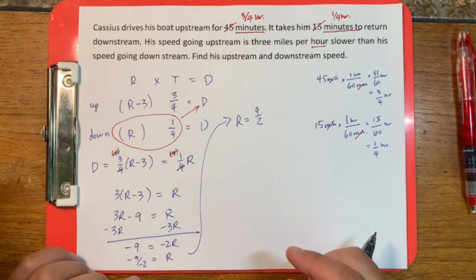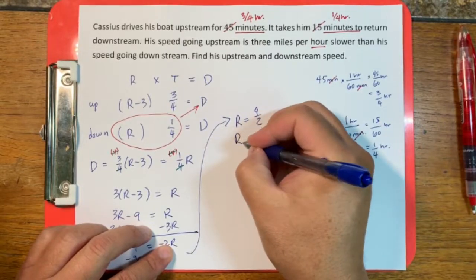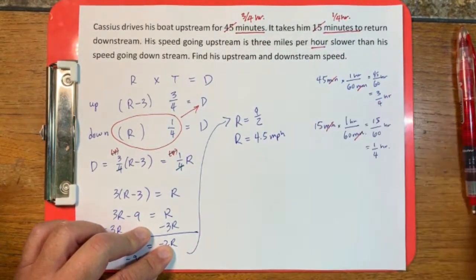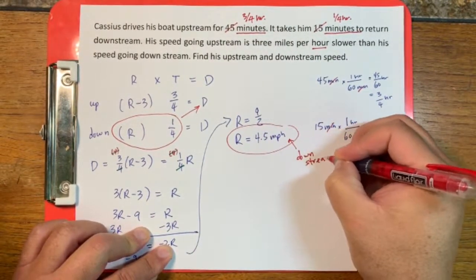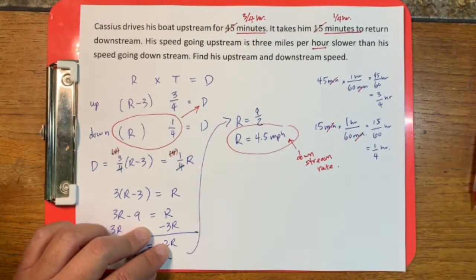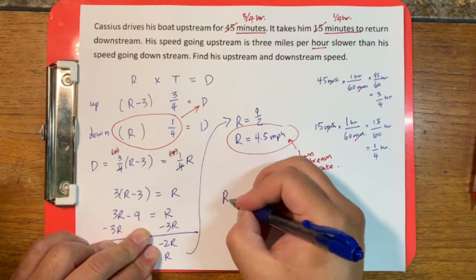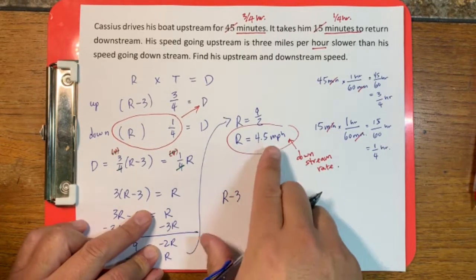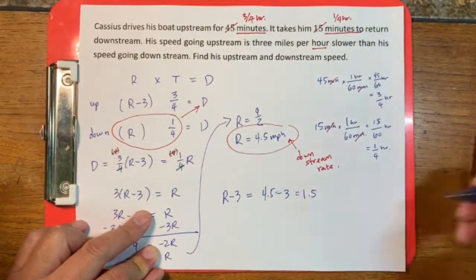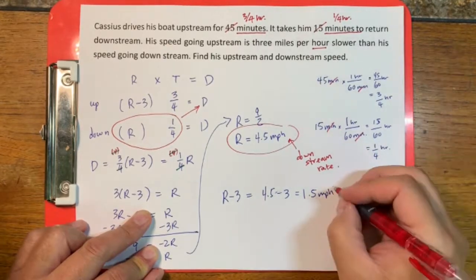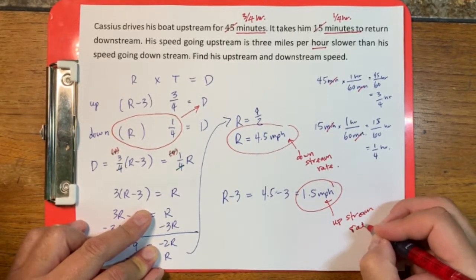So r is our downstream speed: r = 4.5 miles per hour. Since he was 3 miles per hour slower going upstream, the upstream speed is 4.5 − 3 = 1.5 miles per hour. We can plug 4.5 into r − 3 to confirm. That is his upstream rate.